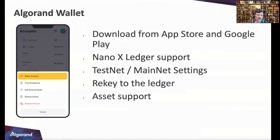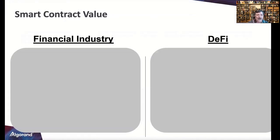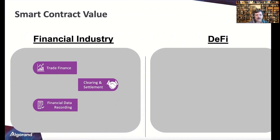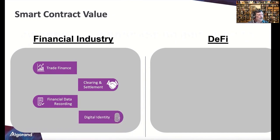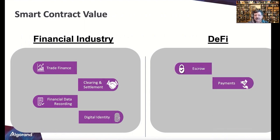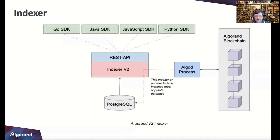We do have an Algorand wallet — the easiest way to work with assets. There's a developer mode where you can toggle to testnet, rekey to a Nano Ledger X with Bluetooth support, and asset support as well. Smart contract use cases in finance include trade finance, clearing and settlement, financial data recording, digital identity, escrow for DeFi payments, credit and lending, and stable coins.